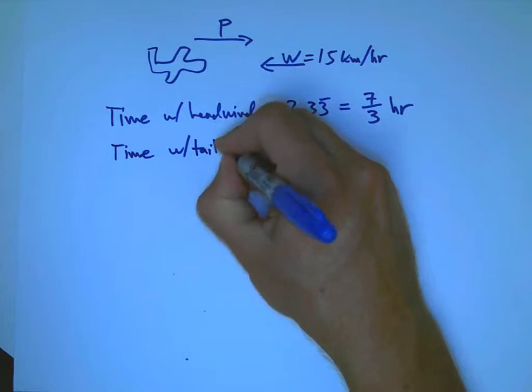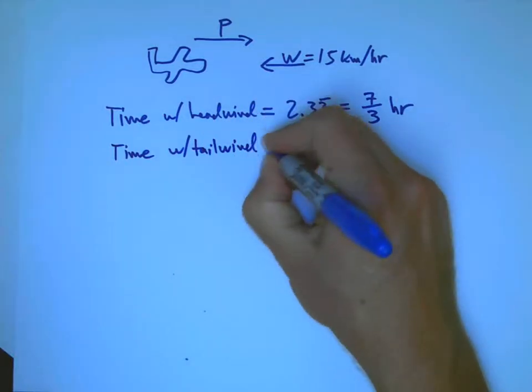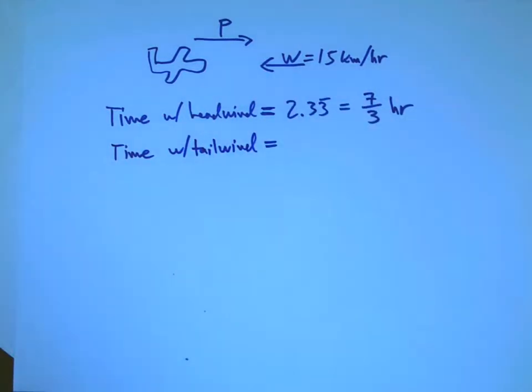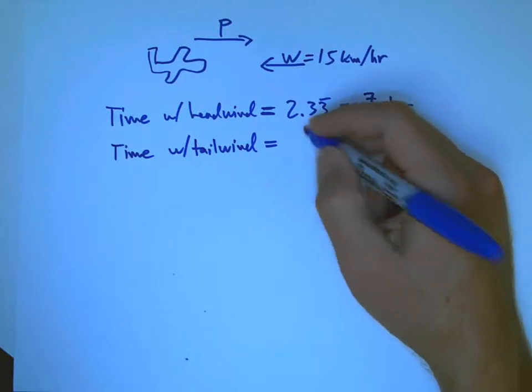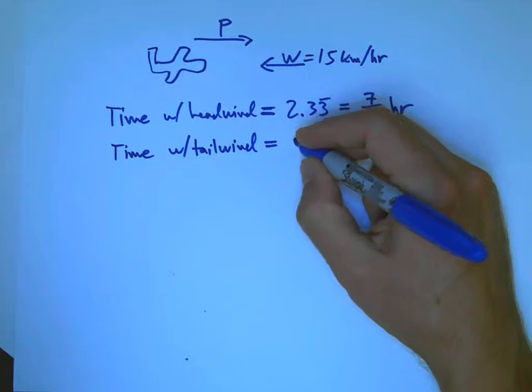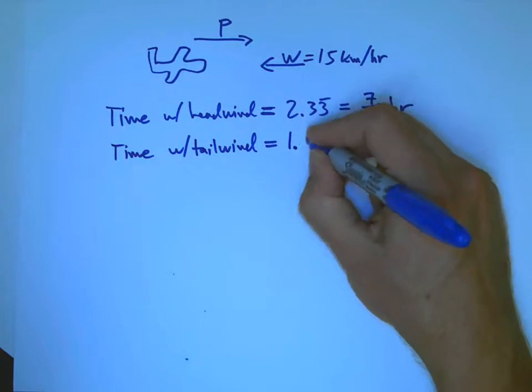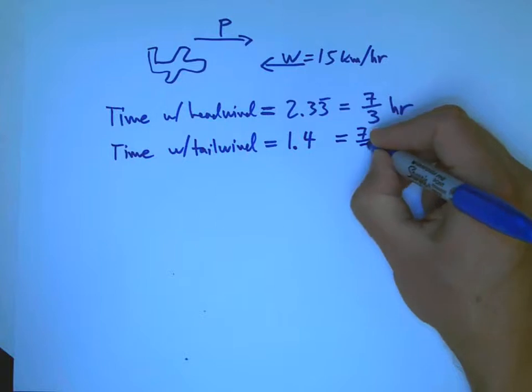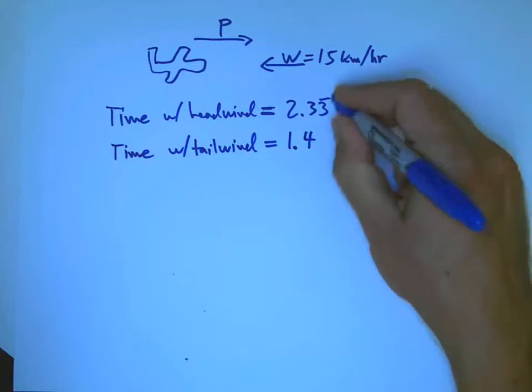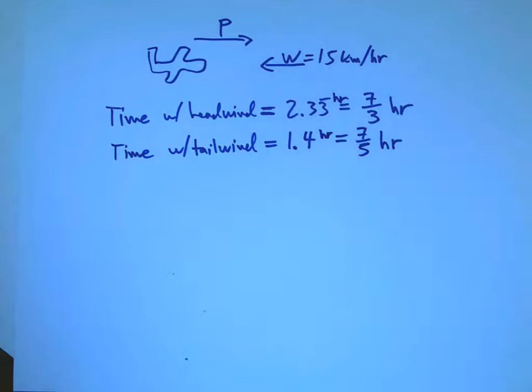And then it says when she returns in the same wind conditions, that's going to become a tailwind. It's going to help her. And these kinds of problems, usually one's going to be a headwind, one's going to be a tailwind. And there it takes an hour and 24 minutes. That's 1.4. Or if we want it in fractions, 7 fifths of an hour.